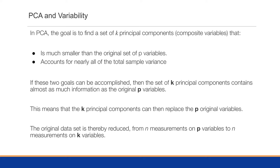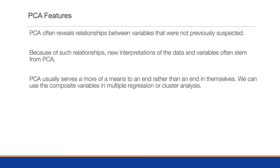Each principal component will explain an amount of variance of the total data set, and putting them all together will account for nearly all of the total sample variance. If these goals can be accomplished, the set of K principal components contains as much information as the total number of original P variables. This means the K principal components can replace P original variables, reducing the data set from N observations on P variables to N observations on K variables.